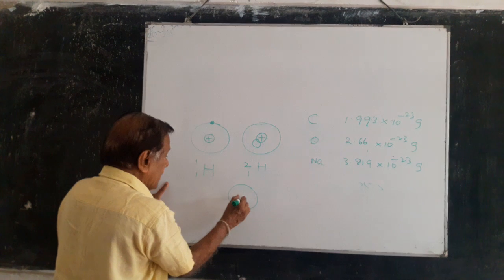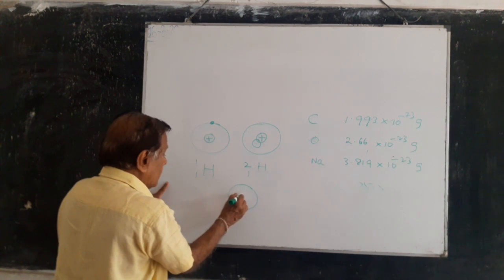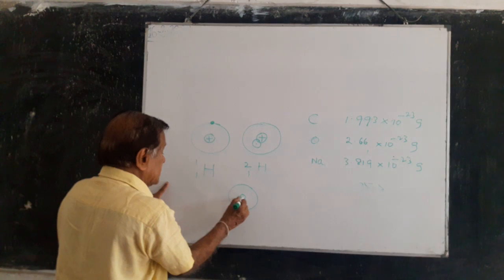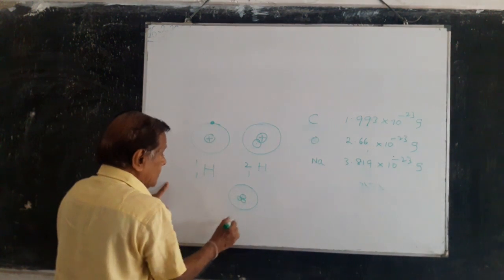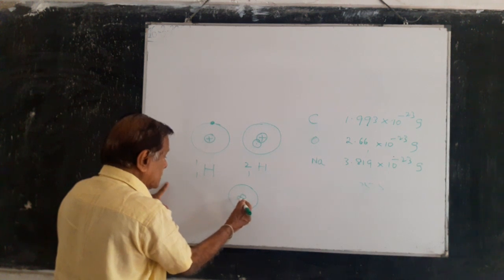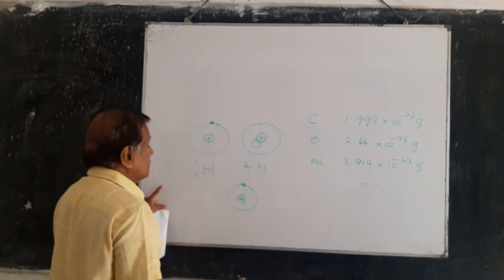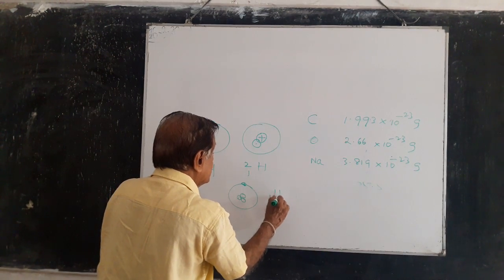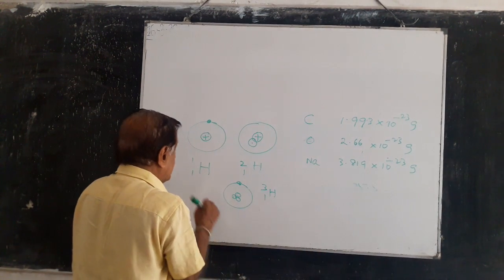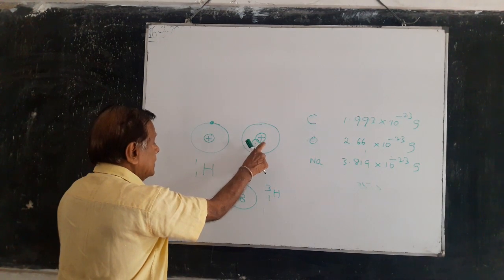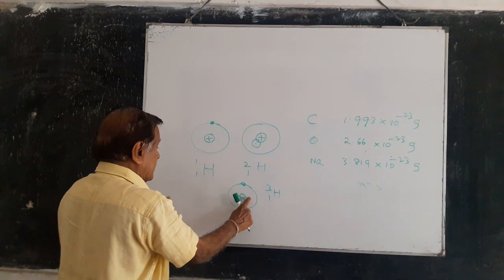In some hydrogen atoms, you have one proton and two neutrons in the nucleus, and one electron. It is ¹H₃ — tritium. So the three isotopes of hydrogen are: protium, deuterium, and tritium.